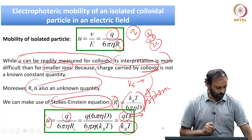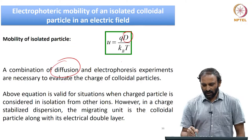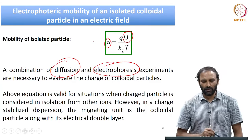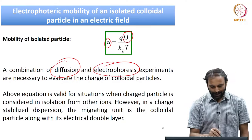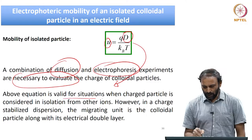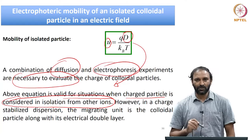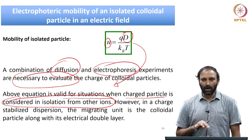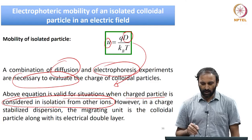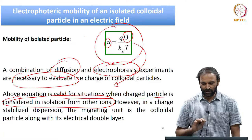A combination of diffusion experiments — which give the diffusion coefficient — combined with electrophoresis experiments — which give the electrophoretic mobility — is necessary to evaluate the charge of the colloidal particle. This equation is valid for situations where the charged particle is considered in isolation from other ions, which is not the true case, since there will be counter ions and an electrical double layer that complicate matters.